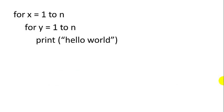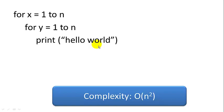Now if we have nested for loops, for x equals 1 to n, and for y equals 1 to n, and then we execute one line of code inside the inner for loop, we can see that this is nested for loops, and it's going to execute n squared times. So this is a big O of n squared algorithm.